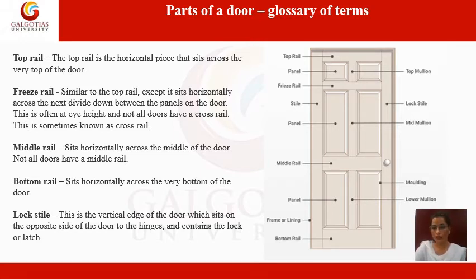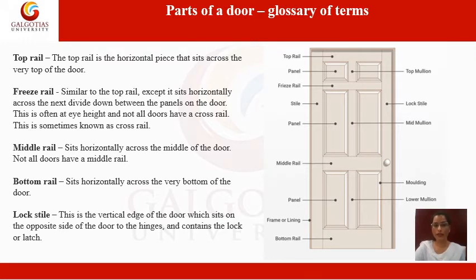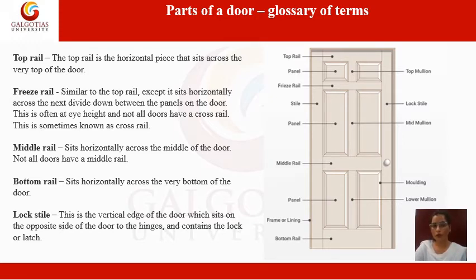The door handle is located here, and this is sometimes called the lock rail. The bottom rail sits horizontally across the very bottom of the door. The lock stile is the vertical edge of the door which sits on the opposite side from the hinges and contains the lock or latch.